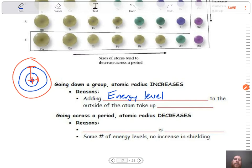We're adding an energy level to the outside of the atom, which then causes the atom to take up more space. This is the more important trend with atomic radius. It may not always be the case with the other ones that we talk about.